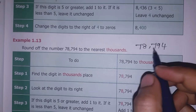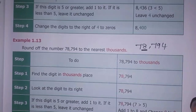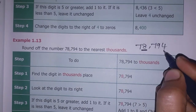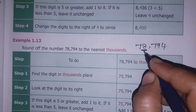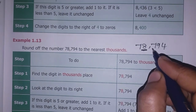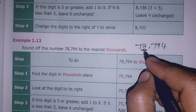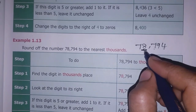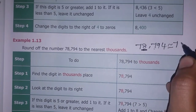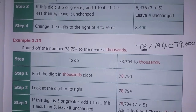First, we underline the digit in the thousands place. The next digit is 7, which is greater than or equal to 5, so we add 1. The thousands digit goes from 8 to 9, giving us approximately 79,000. The remaining digits become 0. This is the approximation symbol. Clear?